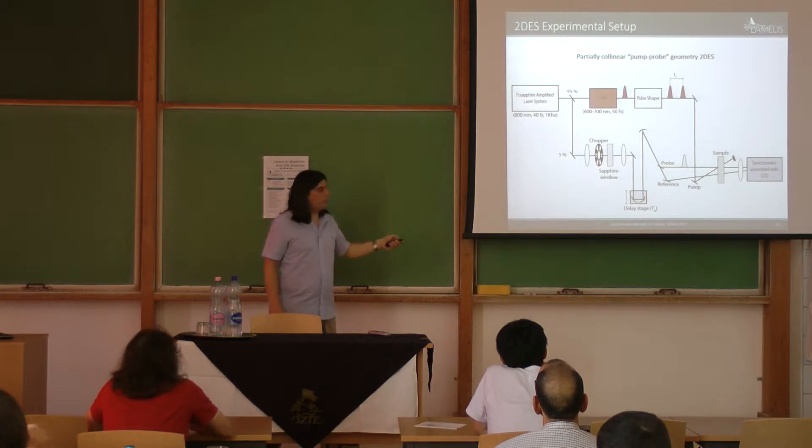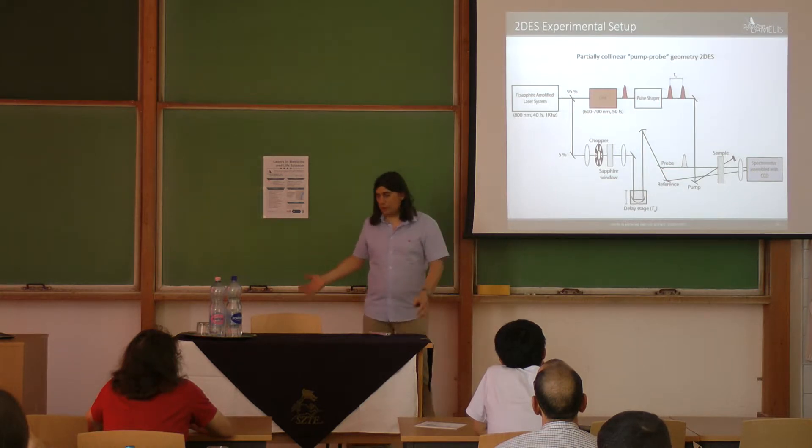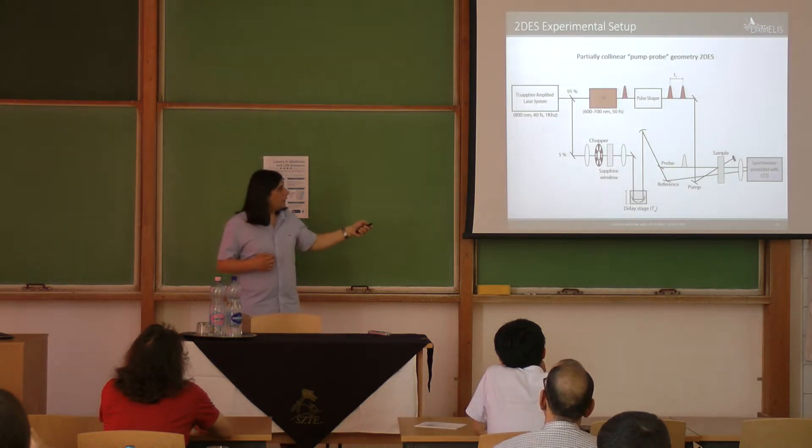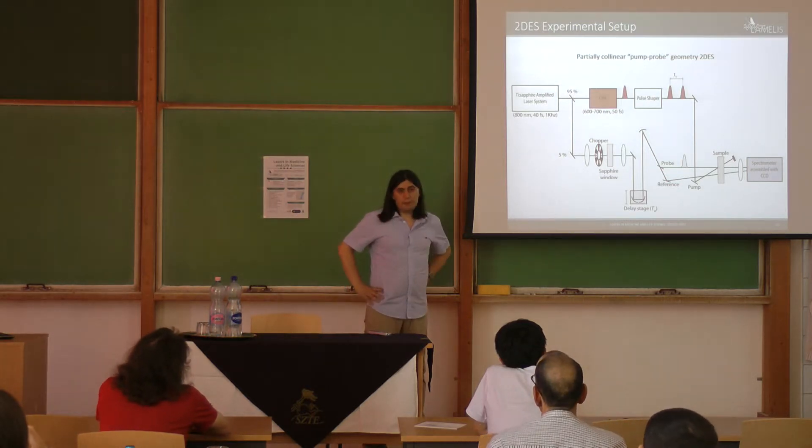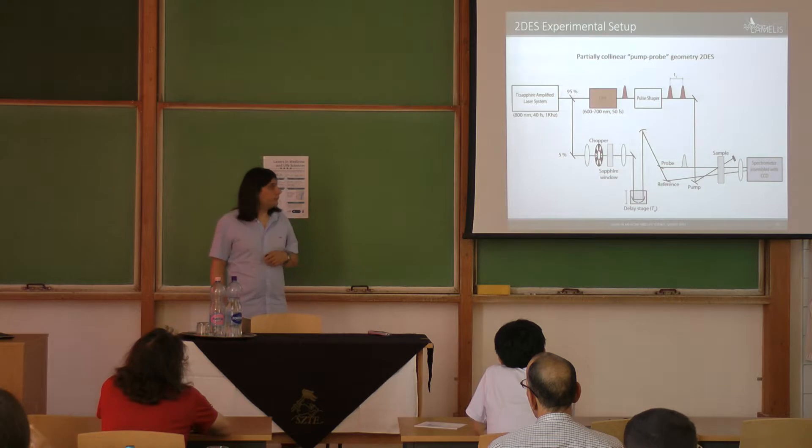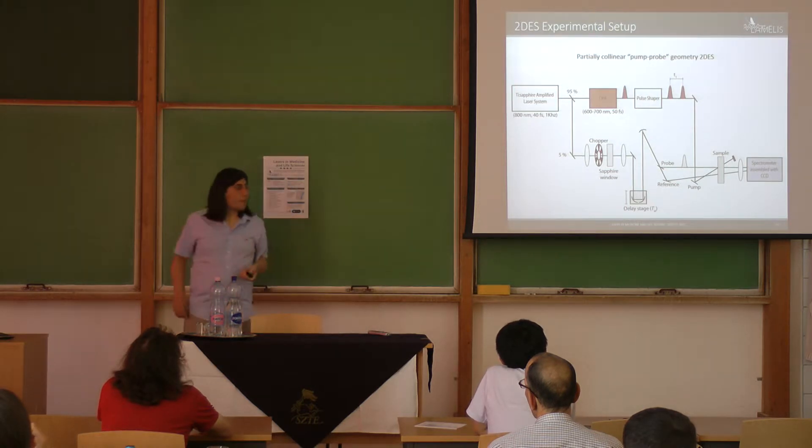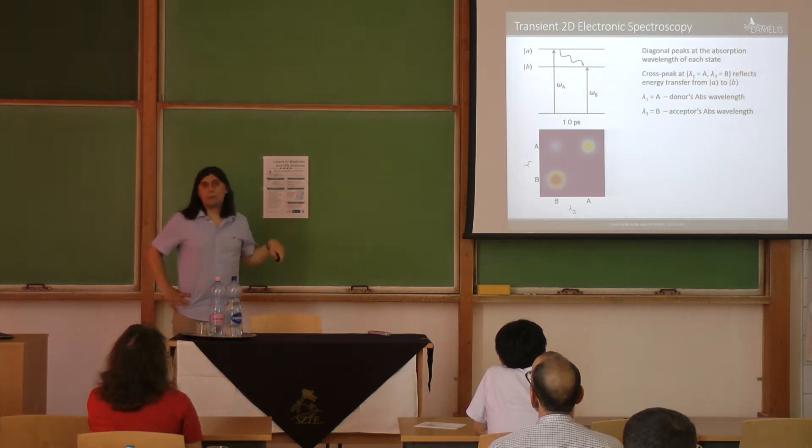But in principle, that is just a transient absorption spectrometer. And in practice, if you have a working transient absorption table, it's not difficult to transform it into a two-dimensional spectrometer. Because all you need is to split the pulses to introduce delay between the pump pulses and the rest is somewhat flat. Incidentally, that part may cost all other parts. But usually not. The laser is always the most expensive. So that was the method.